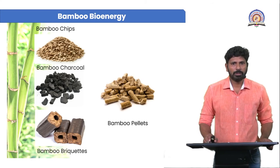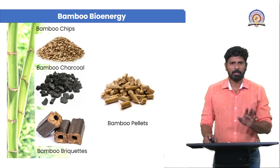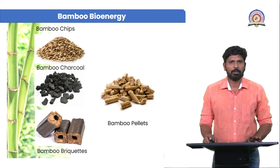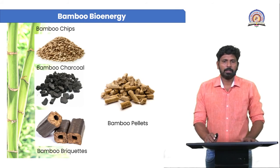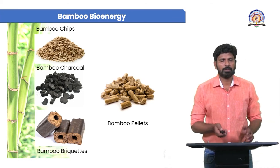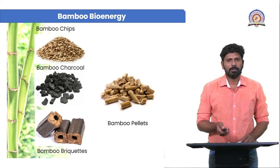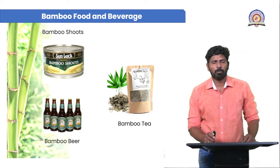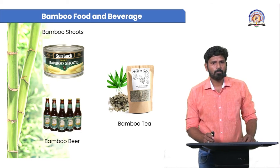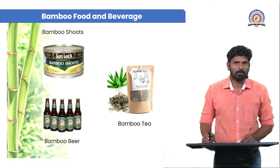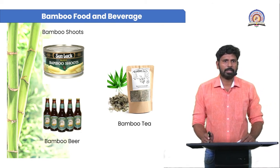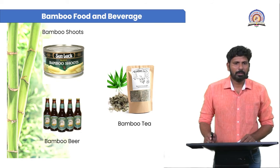Bamboo is also used in bioenergy production. Four things that can be prepared from bamboo are bamboo chips, bamboo charcoal, and bamboo pellets — these can all be used in the bioenergy domain. For food and beverages — an unbelievable use — bamboo shoots are used to prepare food items: directly as bamboo shoots, and also bamboo beer and bamboo tea can be prepared.